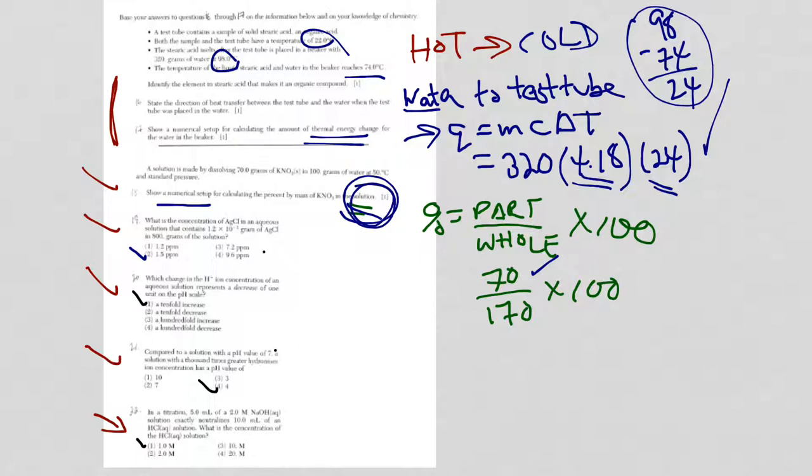Now students will make a mistake here. Solution, remember, is solute, which is the potassium nitrate, and the solvent, which is the water. So it's 170 here in the denominator. That's the whole thing. And don't forget, times 100. You're done. That's all you're looking for, numerical setup.